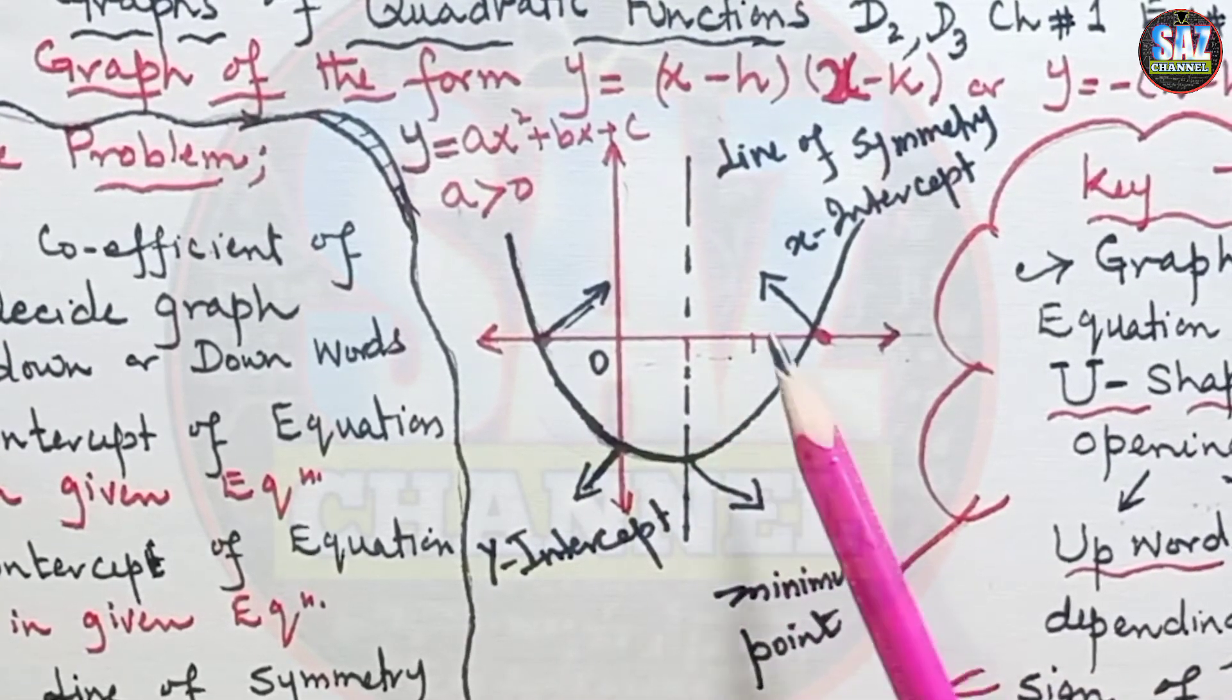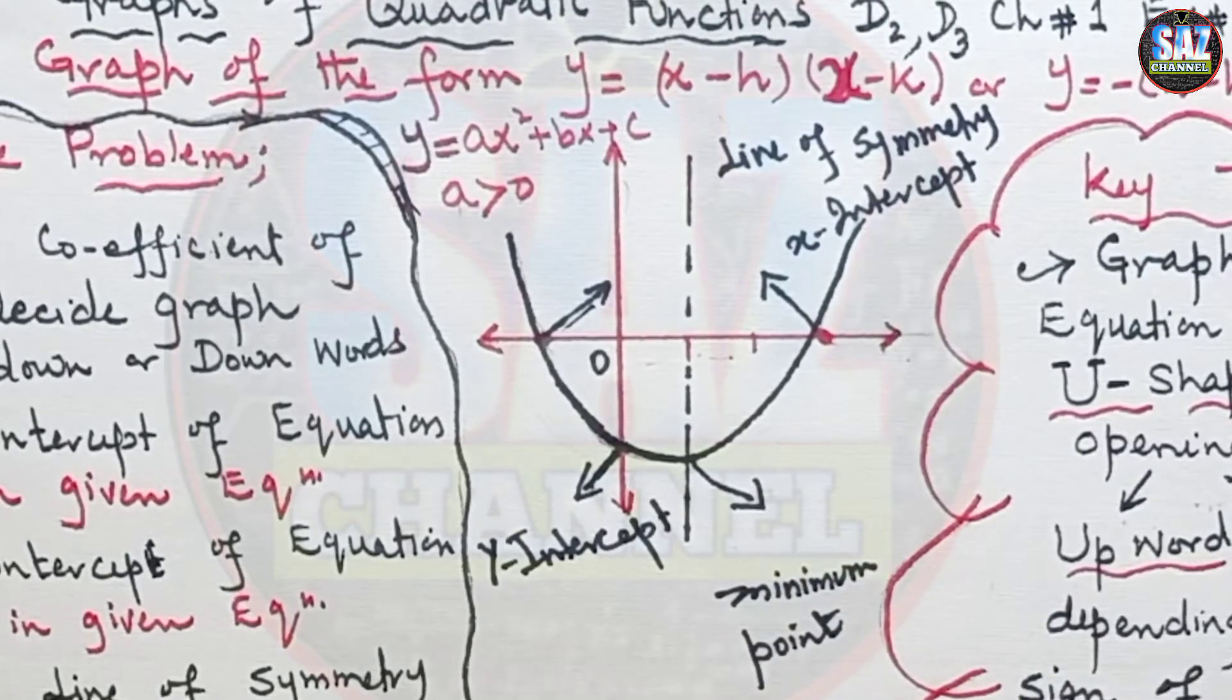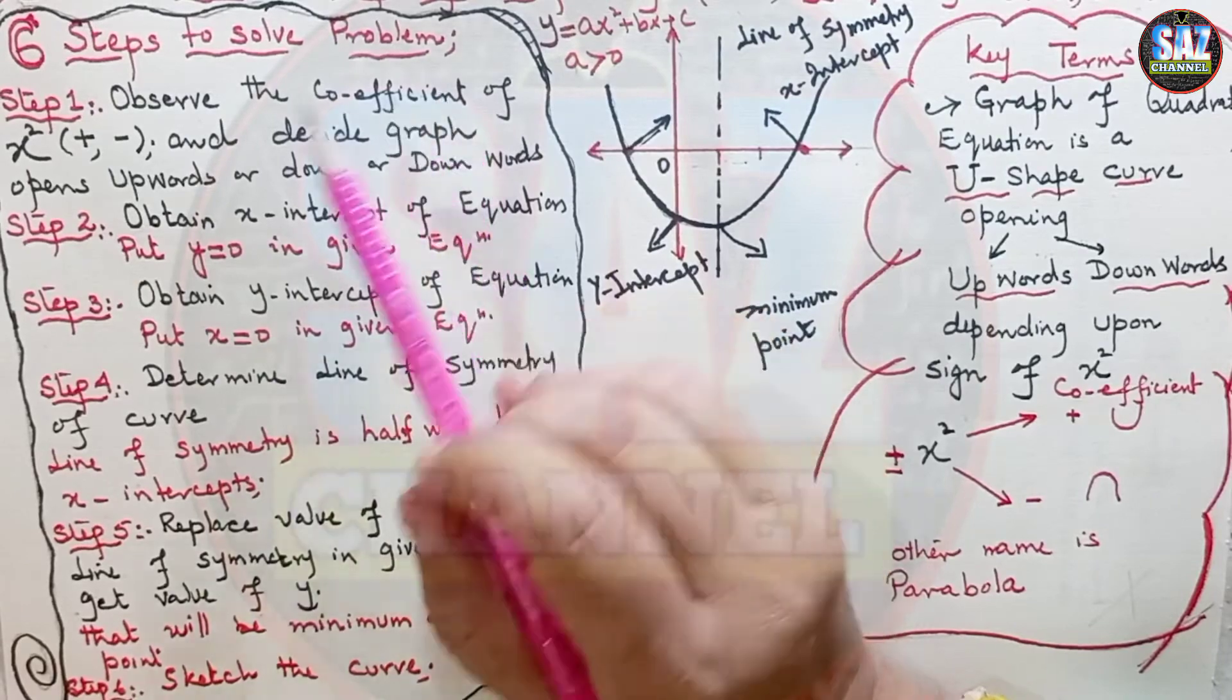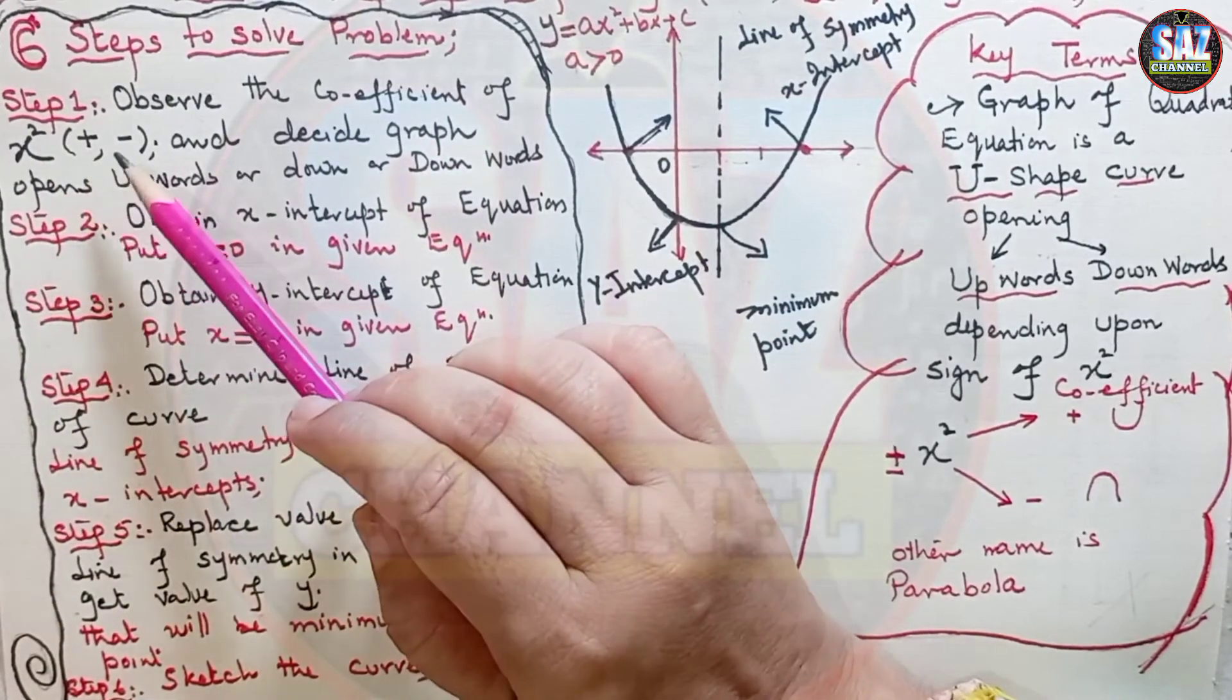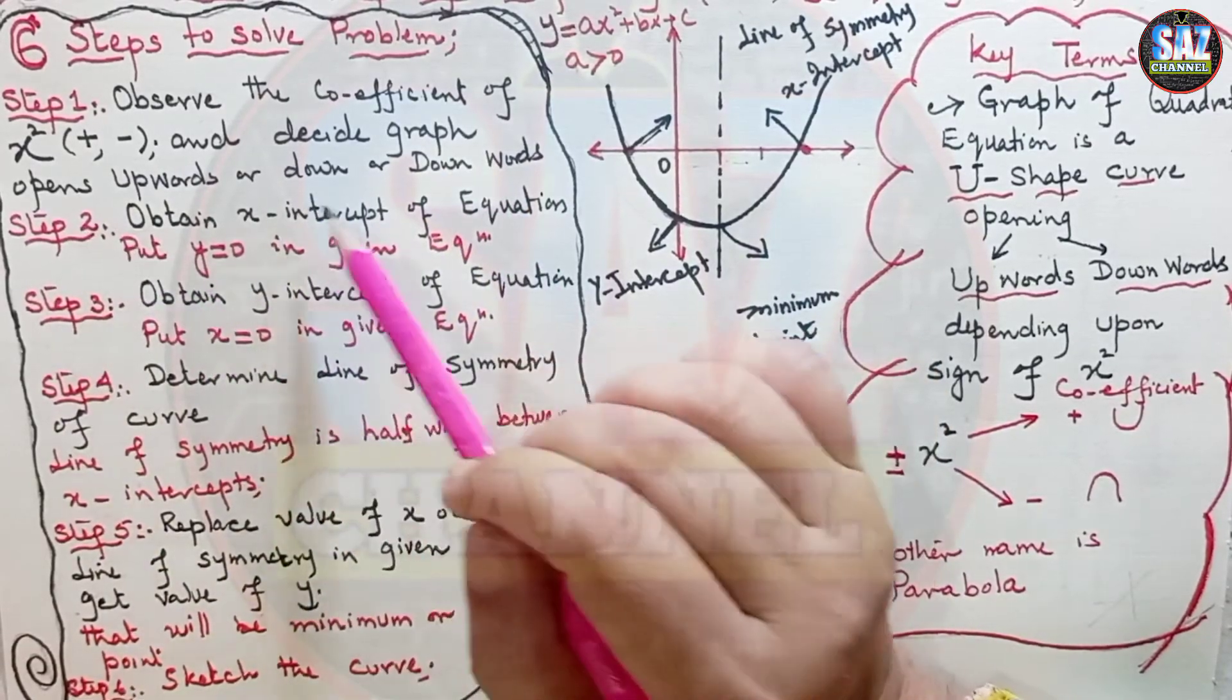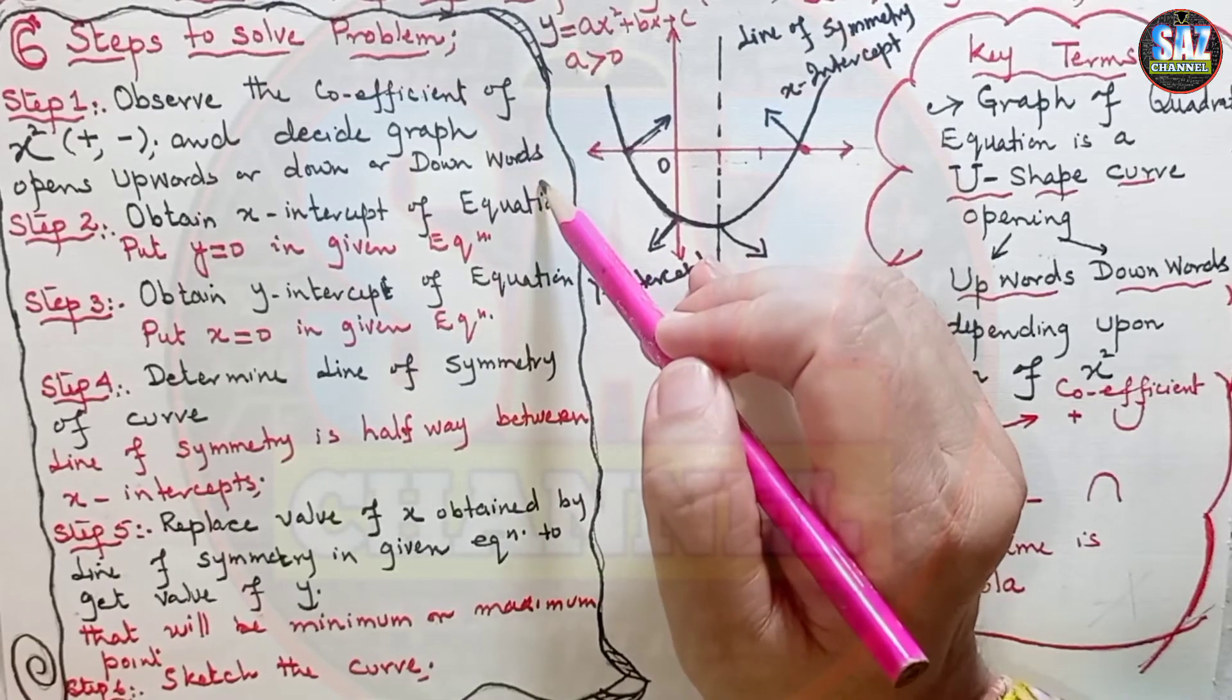Here I'm going to explain the procedure in six easy steps to solve any problem. Step one is that observe the coefficient of the square term, whether it is positive or negative, and decide if the graph opens upward or downward. I hope step one is clear to all of my students.